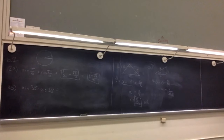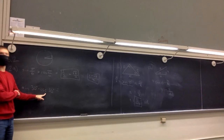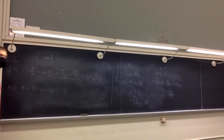Sine and cosecant are reciprocals of each other, so whatever sine is, cosecant is one over that. If you can remember other relationships, you might not have to memorize every value.